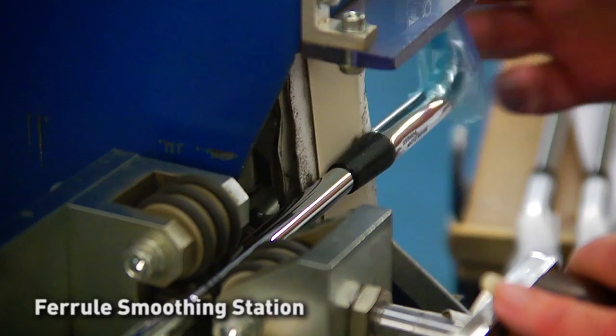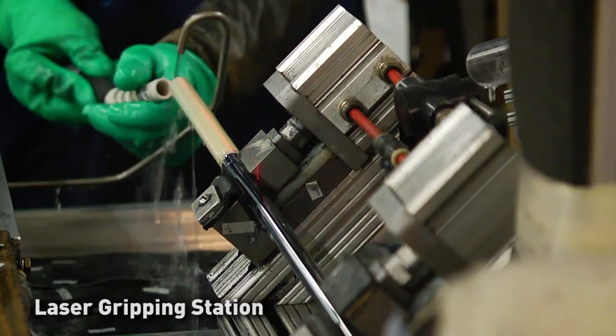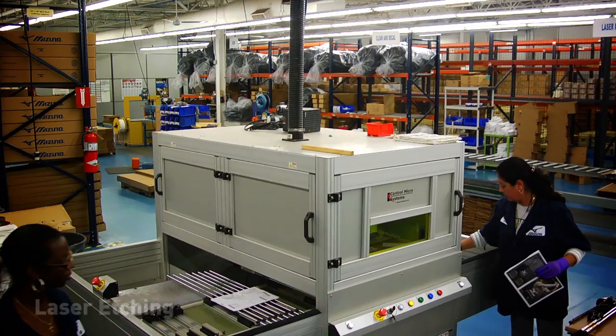From there, the ferrule of the club is ground down to create a seamless transition from the hosel to the shaft. Next, we apply your grips through the use of a laser-guided gripping station, which ensures proper grip alignment on each shaft.